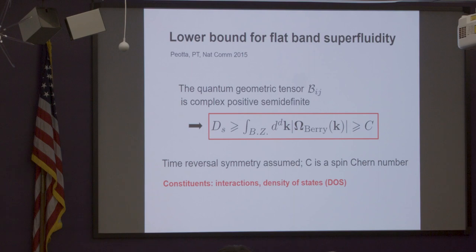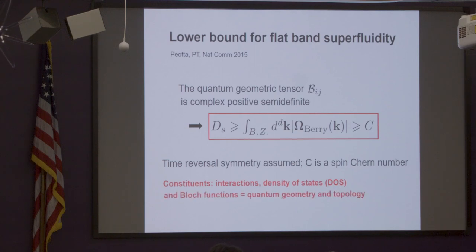The message is that if we want to influence superconductivity and get to higher T_c, the constituents are not only that we can manipulate interactions or density of states — we should also look at the Bloch functions. Quantum geometry matters: you can use it to either have superconductivity or not. That's the message.